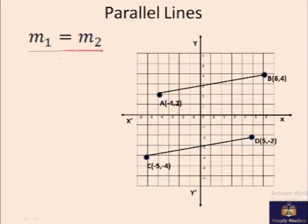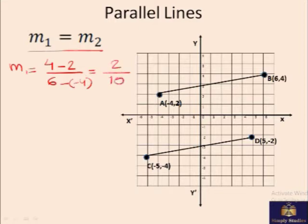Let's test if it's true or not. M1 is the slope between these two lines. That is Y2 minus Y1, so that is 4 minus 2, divided by X2 minus X1, that is 6 minus minus 4. And it comes out to be 2 over 10 or 1 over 5. That's the slope of the first line.